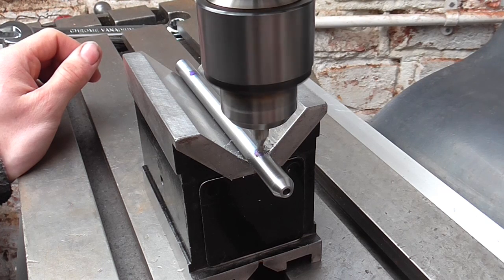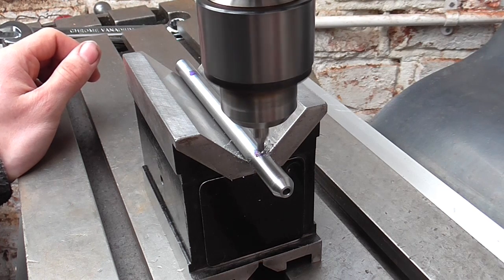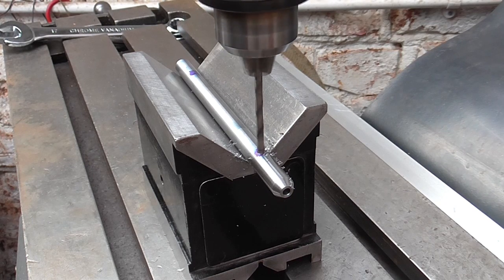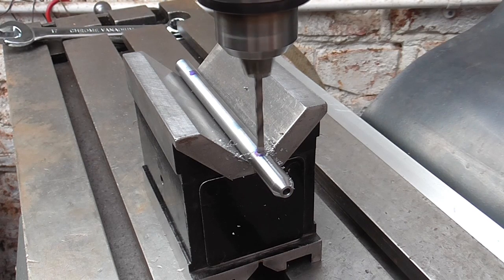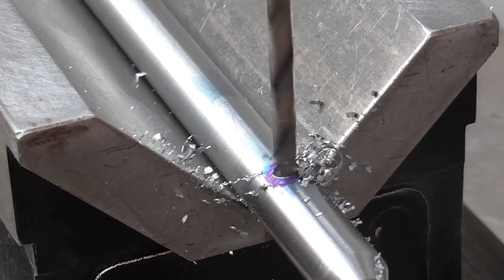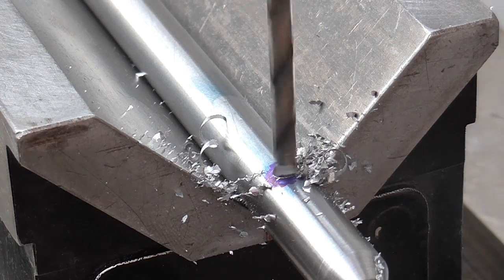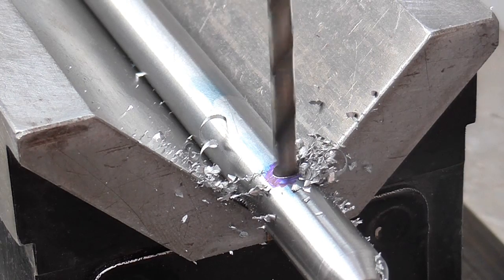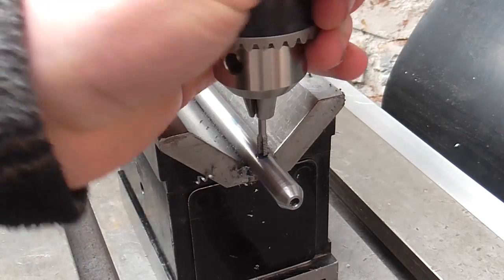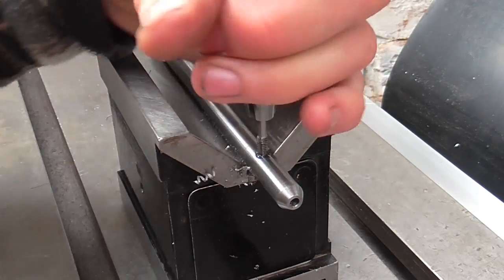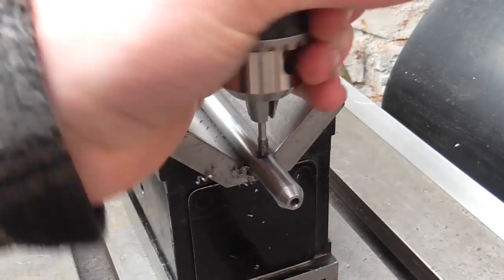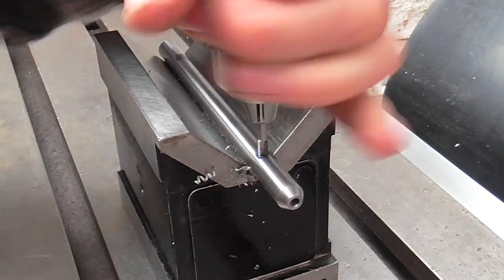I'm using the magnetic V block for drilling my cross holes. And now I'm using the trusty tapping chuck. So I'm using the tapping chuck to make a tapping device.